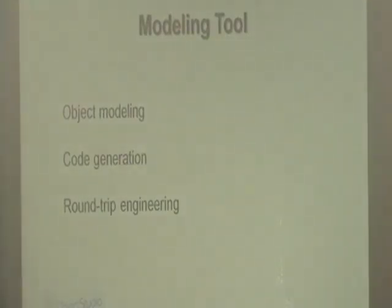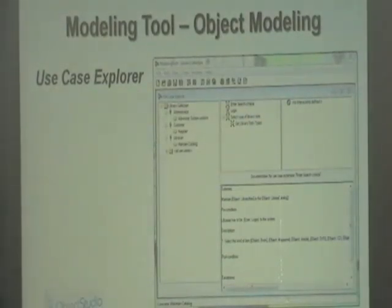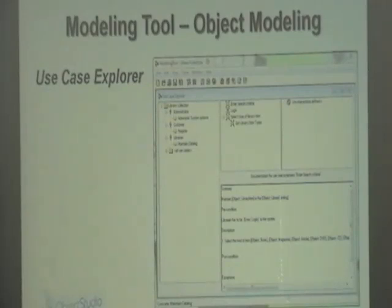Model 2 consists primarily of object modeling, code generation, and production engineering. First, there is a use case explorer where you can define actors and the use cases for each actor. As you define the use cases in text, you can define use cases and extensions, and build a tree showing relationships between the different use cases — how they extend and how they include each other. As you define the text, you can also start defining possible domain objects.